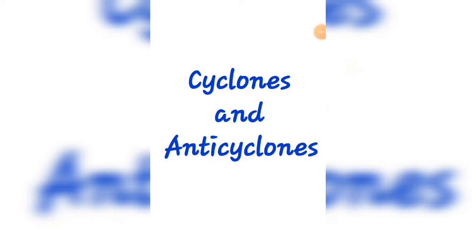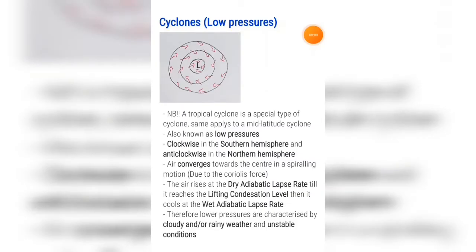In this video we'll be discussing cyclones and anticyclones, otherwise known as low and high pressures. A cyclone is a low pressure and we get special types of cyclones — these are known as tropical cyclones and mid-latitude cyclones.